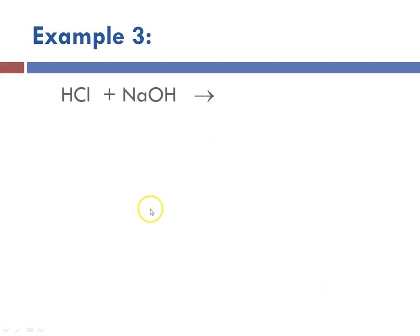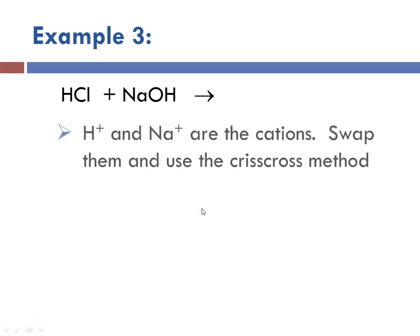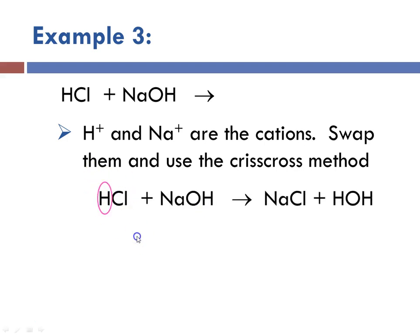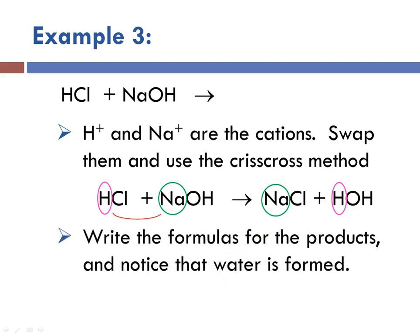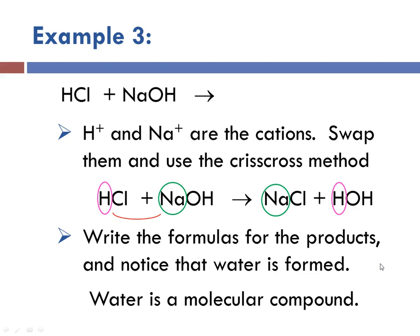Example three: this is HCl, aqueous hydrochloric acid, with NaOH, sodium hydroxide. H⁺ and Na⁺ are our cations. We're going to swap and use our crisscross method to write the correct formulas. That results in sodium with chloride ion, and H⁺ with OH⁻. We can notice that HOH is water, and one of our conditions for a double replacement is a molecular compound. Water is molecular because H and O are nonmetals — nonmetal plus nonmetal gives a molecular compound. So water is the driving force here.